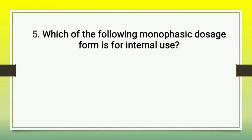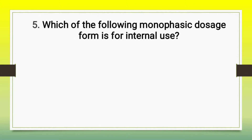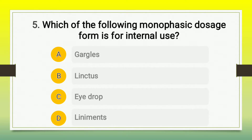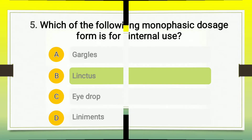Moving to question number 5: which of the following monophasic liquid dosage forms is for internal use? The options are A) gargles, B) linctuses, C) eye drops, and D) liniments. The right answer is linctuses, because all the rest are monophasic liquid dosage forms but they are for external use.